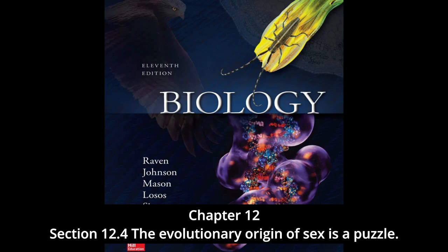Sex is of great evolutionary advantage for populations or species, which benefit from the variability generated in meiosis by random orientation of chromosomes and by crossing over. However, evolution occurs because of changes at the level of individual survival and reproduction rather than at the population level, and no obvious advantage accrues to the progeny of an individual that engages in sexual reproduction. In fact, recombination is a destructive as well as a constructive process in evolution.